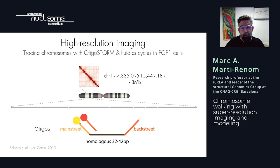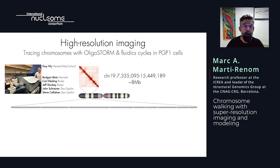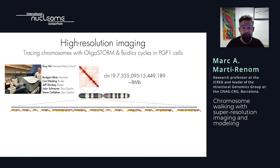They designed the oligos to contain what they call the main street and the back street — secondary oligos that hybridize to either end, allowing both to be used simultaneously or at different moments in the cycle. When they hybridize, it blinks, and with OligoStorm you capture those blinkings. For the walking, you first send all the oligos at once, designed to hybridize to different parts of the nine walks. Then in one fluidic cycle, you release the secondary oligos for the first segment, capture the image, wash out, then proceed to the next walk.